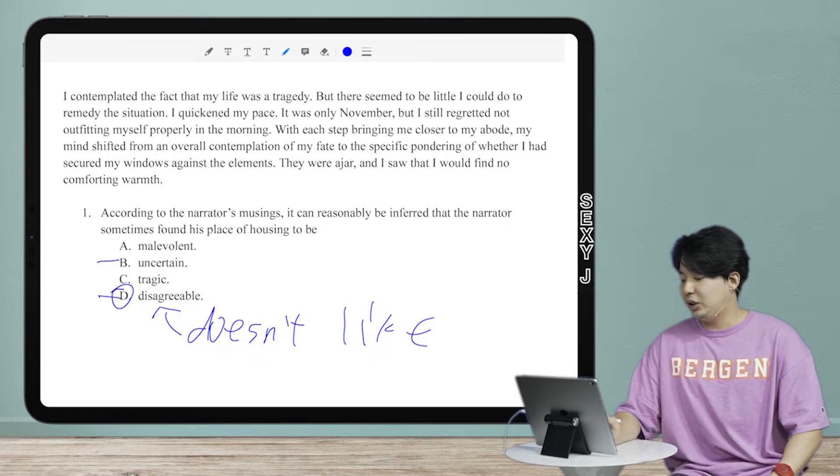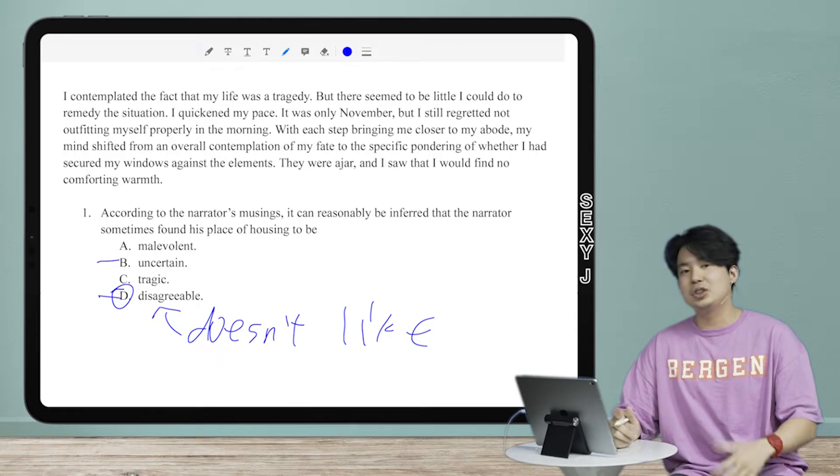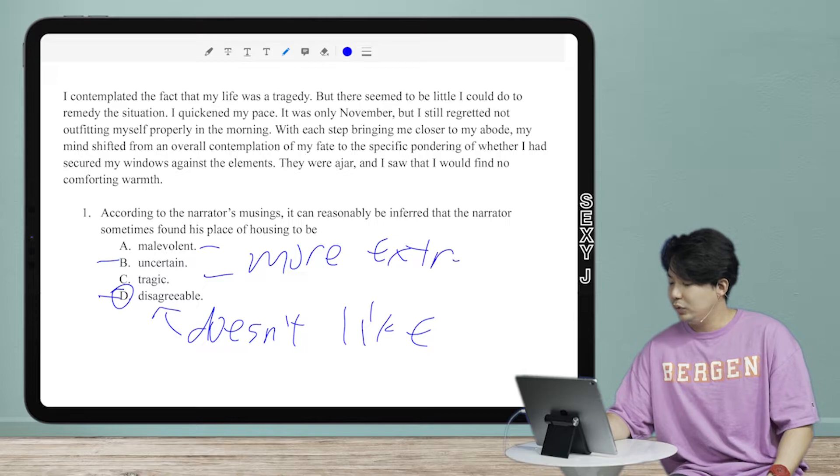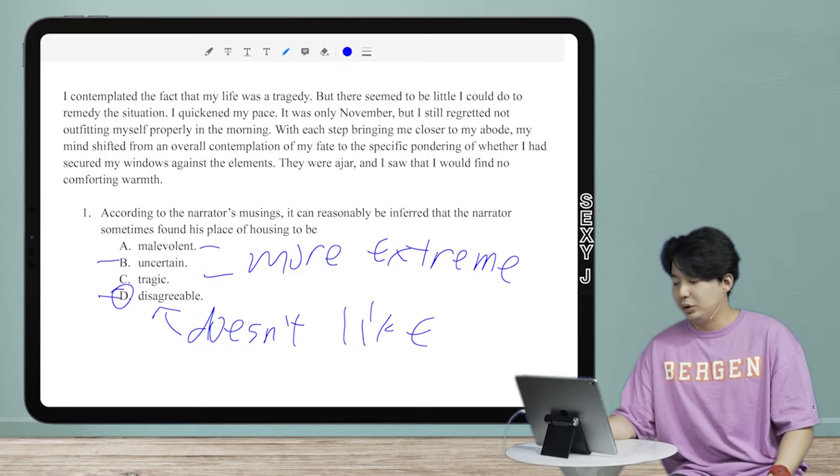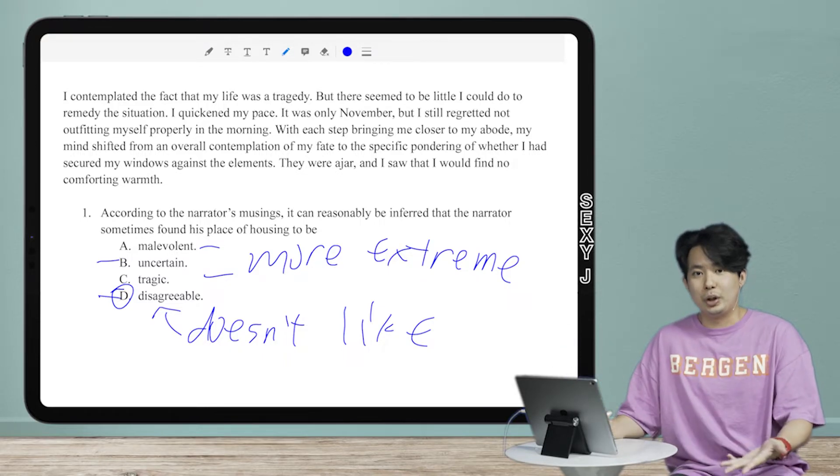And another clue here is that you guys see that A is negative, malevolent, that's very negative. And also C is negative, tragic, also negative. Those are more extreme versions of a negative emotion. So if I have more extreme versions than the less extreme version, the less extreme version is more likely. That's better.